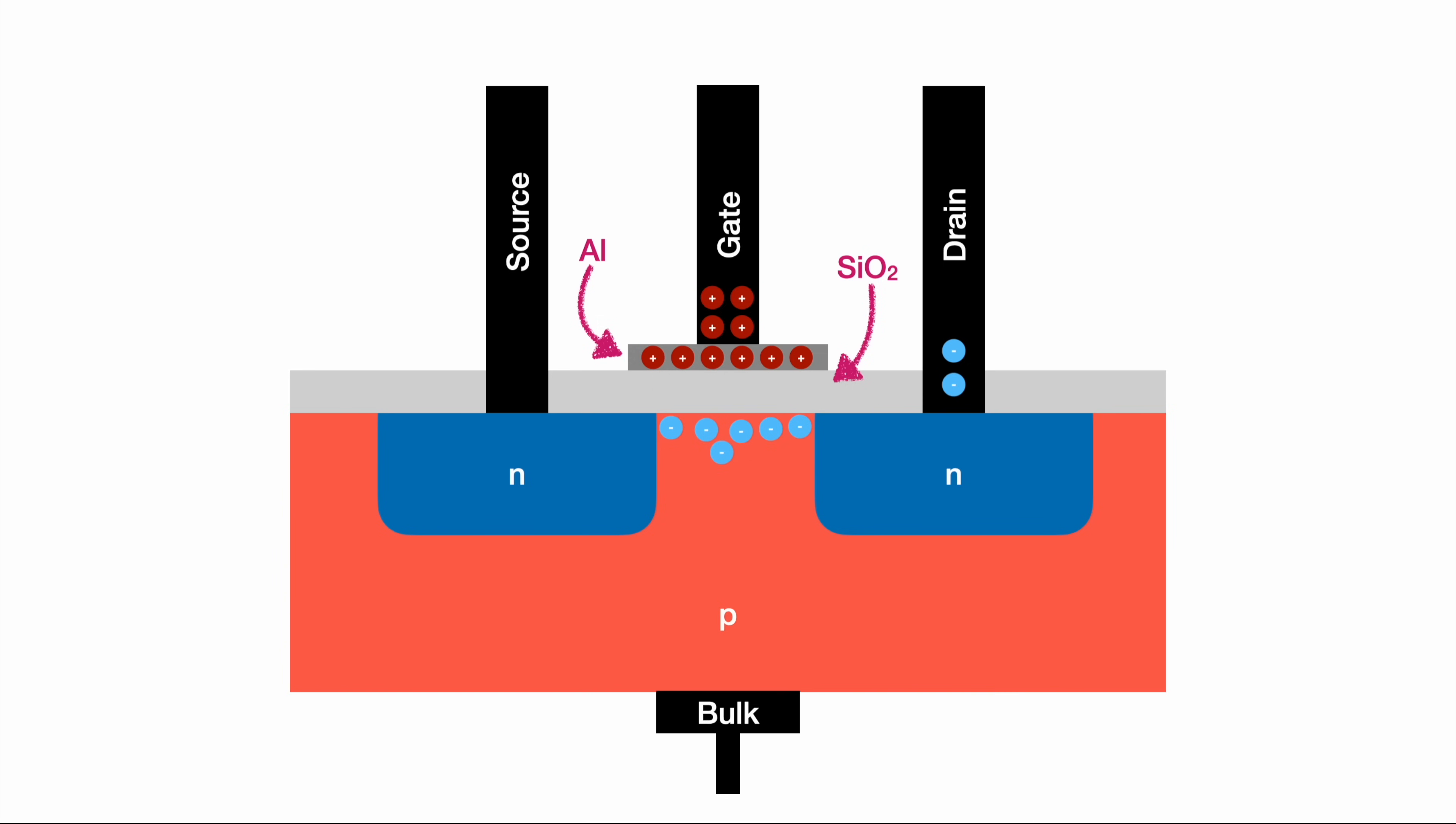The MOSFET may seem complicated compared to a bipolar junction transistor, but it comes with benefits. Taking a closer look at the gate area, we applied a voltage to create this positive charge, but there's no actual current flowing through the gate.